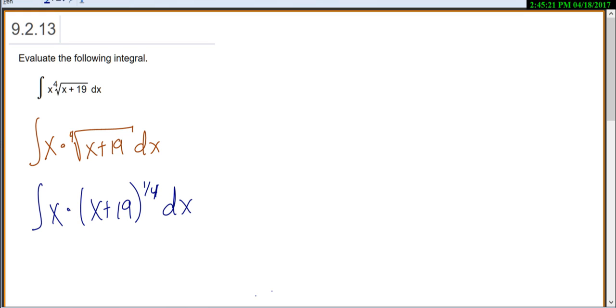Now I always try u substitution first before I try integration by parts. But looking at this, if I made the inside x plus 19 my u, then the derivative of that will just be 1 and I don't have a way to get rid of this x. And because I can't get rid of this x, I know I'm going to need to do integration by parts.